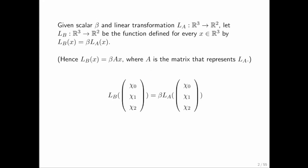We introduce matrix scaling by starting with a scalar beta and the linear transformation L sub A, which takes a vector of size 3 and maps it to a vector of size 2. We also define a vector function L sub B, which we don't yet know is a linear transformation, that also maps a vector of size 3 to a vector of size 2. L sub B of x is computed by plugging x into L sub A and then multiplying the result vector by beta. We know how to multiply a vector by beta — that's just multiplying the individual components by beta.